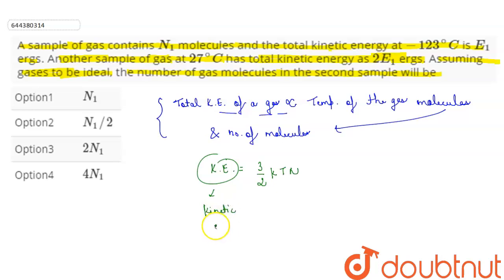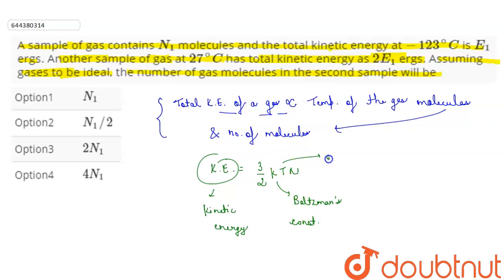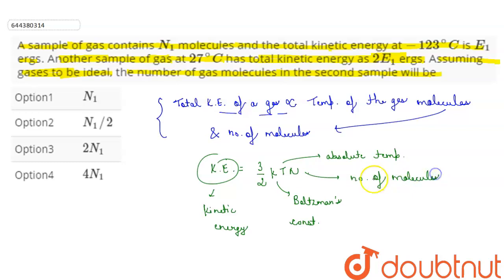Where KE is kinetic energy, k is the Boltzmann constant, T is the absolute temperature of the gas, and N represents the number of molecules of the gas.